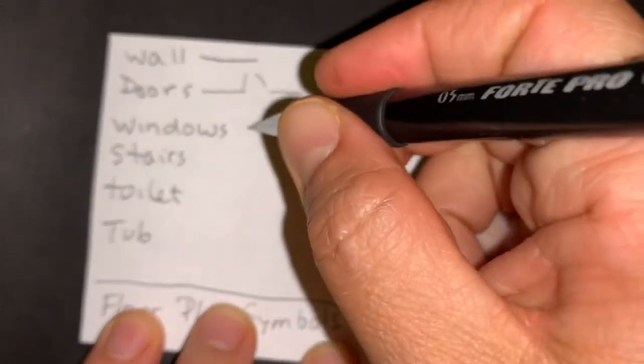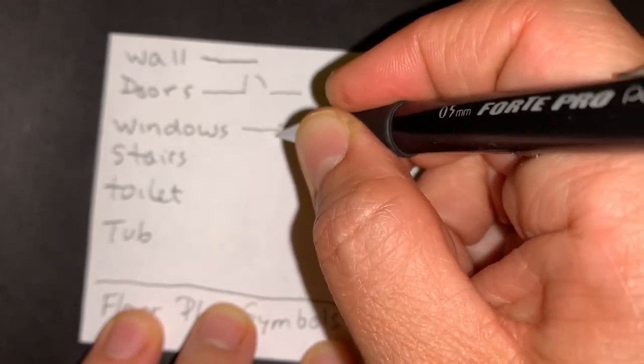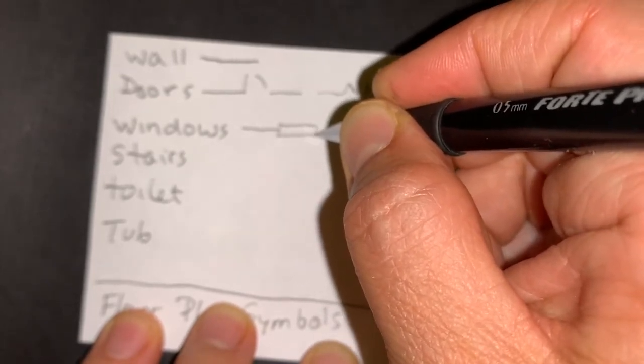Windows are a wall with a rectangle in it to show where the window is placed.